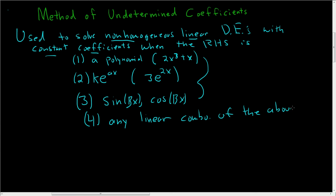So if you have a non-homogeneous linear differential equation with constant coefficients, and the right-hand side is a polynomial, an exponential function like e^(3x), e^(5x), or e^(-x), and the nice trig functions like sine and cosine, or any linear combination of the above, you can use the method of undetermined coefficients.